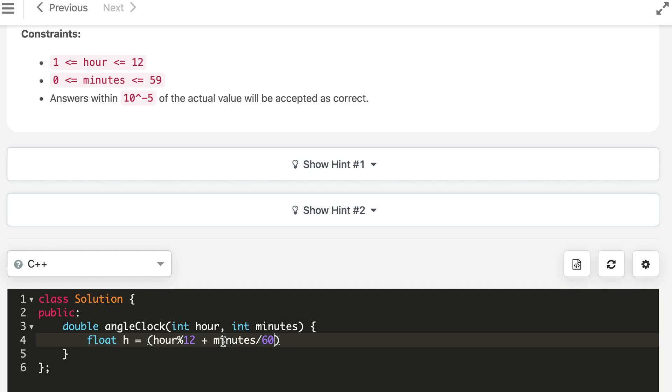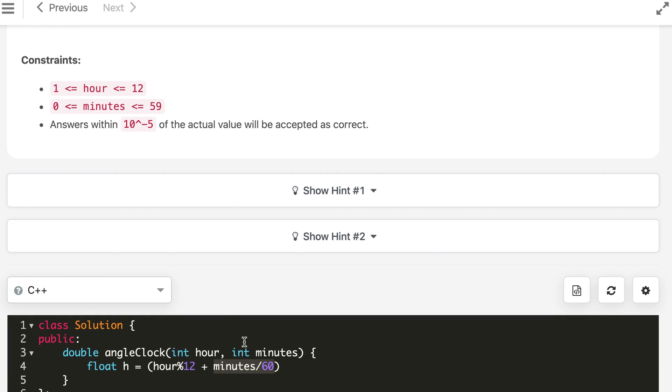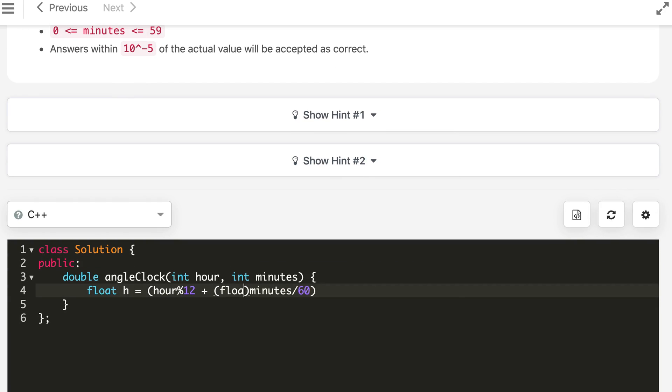So this will be the fractional hour. And this is integer. So if you divide by 60, this entire thing will be integer. And it will always be 0 since minute is maximum 59. So this will always be 0. So better to convert it to float. And then this multiplied by 30. So 30 comes from 360 divided by 12. That is 360 is divided into 12 hours. And then the position of minute handle is minutes multiplied by 6. And this comes from 360 divided by 60. 360 is divided into 60 minutes.